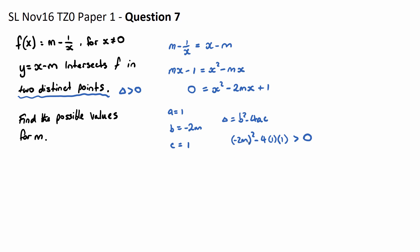So negative 2m all squared is 4m squared minus 4 is greater than 0. Now I want to solve for m here, so I'm going to take the 4 to the other side. So 4m squared is greater than 4. Divide by 4: m squared is greater than 1.